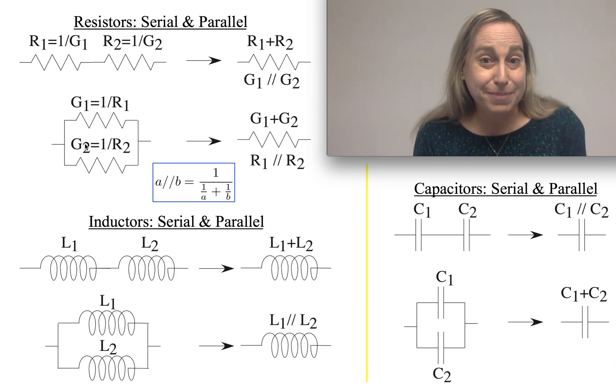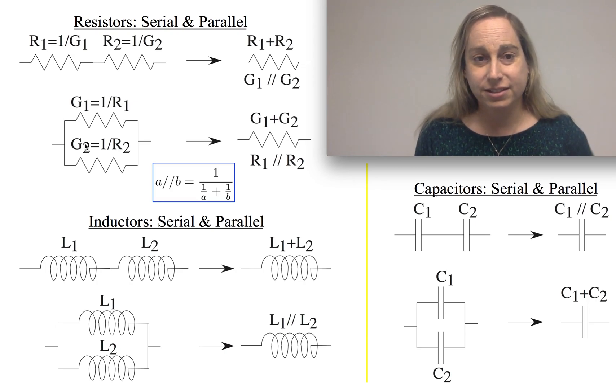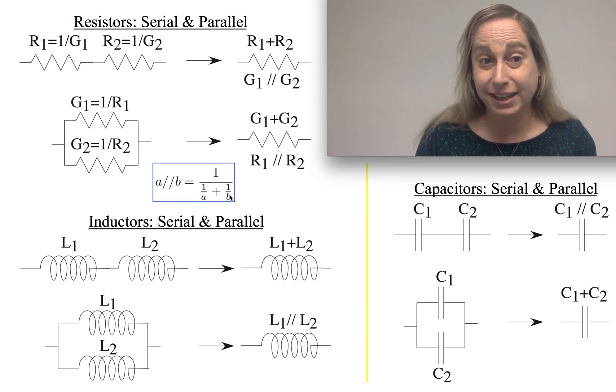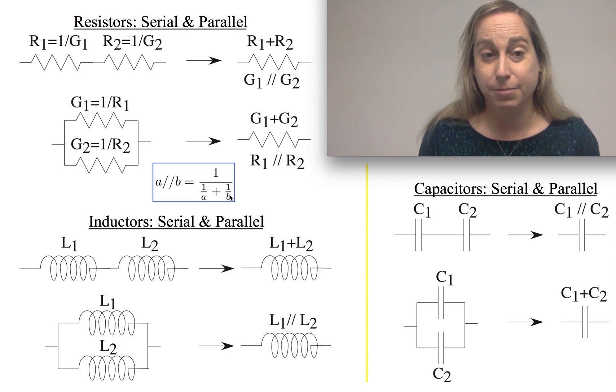What does that mathematically mean? Well, if you think about the conductance, conductance and resistance are inverse of each other. And as a result, I get this really interesting formulation. And so I'll talk about this general concept of A parallel B as being one over one over A plus one over B. Again, you can see the inverse of these operations.